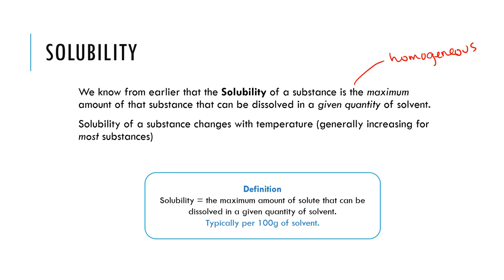The solubility of a substance changes with temperature, generally increasing for most substances. You can think about this: if you take a spoonful of sugar and try to mix it into ice-cold water, it won't dissolve very well. But if you use hot water, like when making a cup of coffee or tea, that sugar will dissolve far more quickly and easily for the same amount of sugar and water.